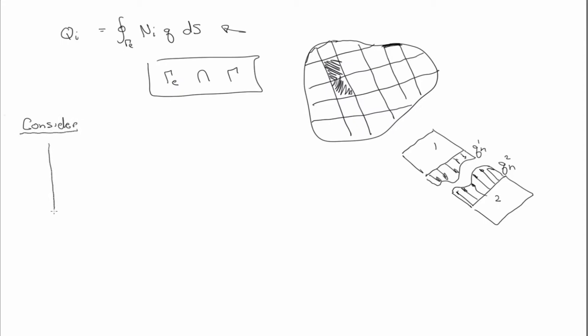So consider an element, we'll use a triangular element. Height B with A, that's in a global system XY, global coordinate system XY, but has a local coordinate system S and T.